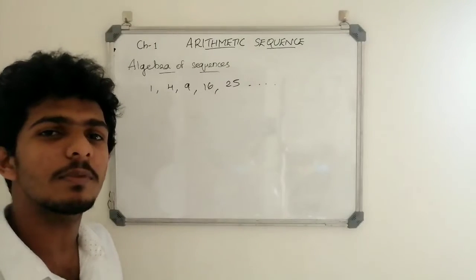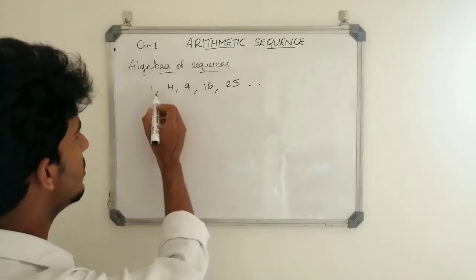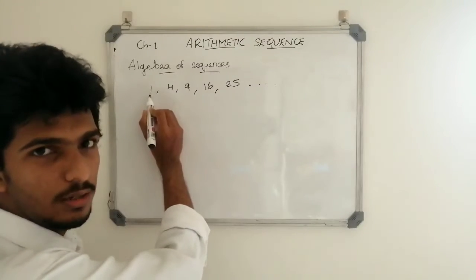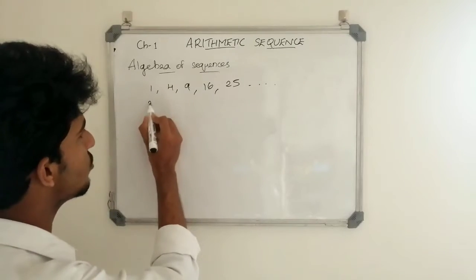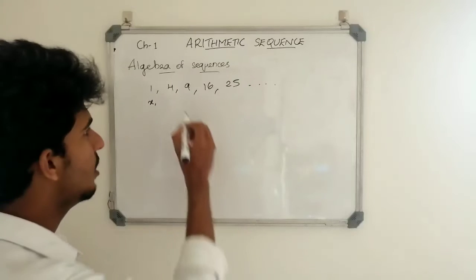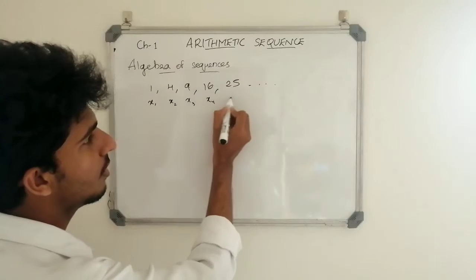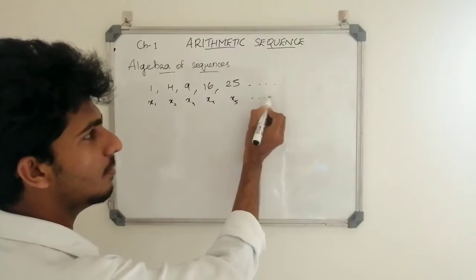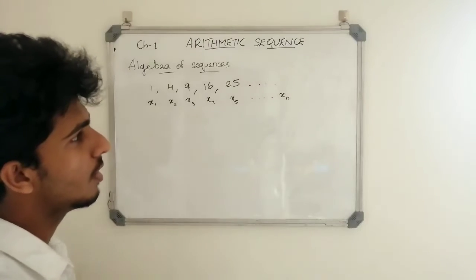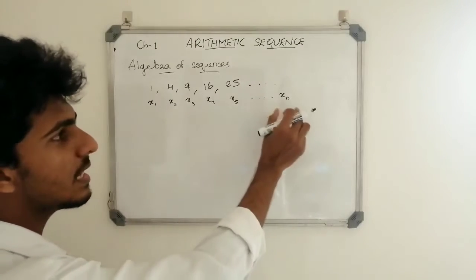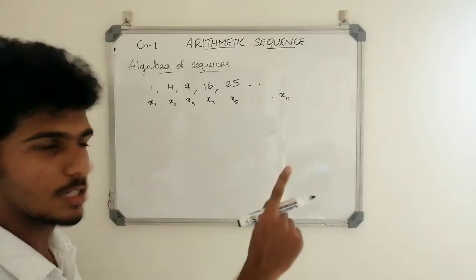Let's use x to denote the terms. The first term is 1, the second term is 4, the third term is 9. We write these as x1, x2, x3. For the final or general term, we take xn — this is the common term.